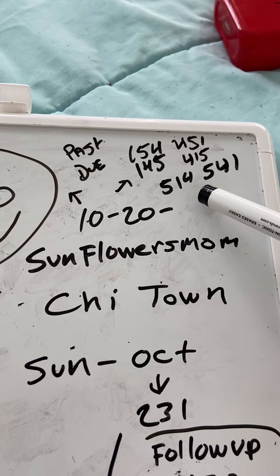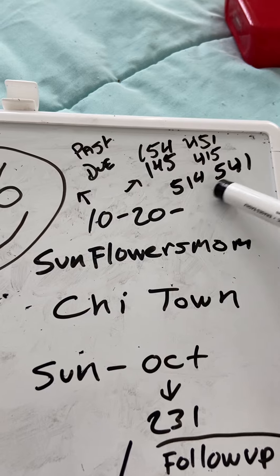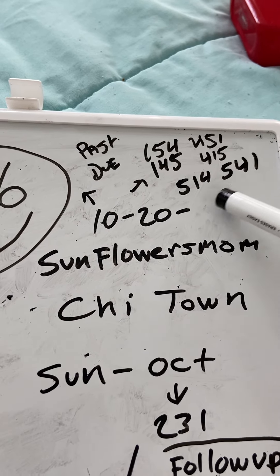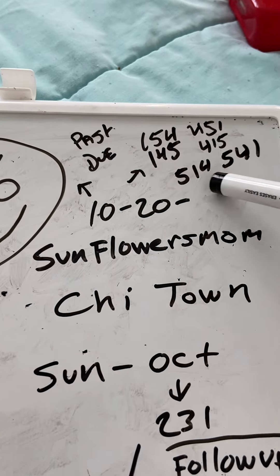Right here, 1-5-4, any combination, any way you want to play it, just make sure you box it. Whether it's a dollar box, a dollar straight, just make sure you box this number. It's overdue.